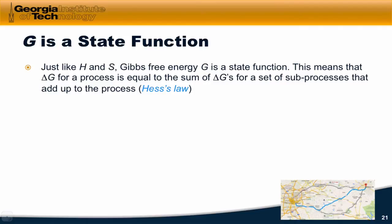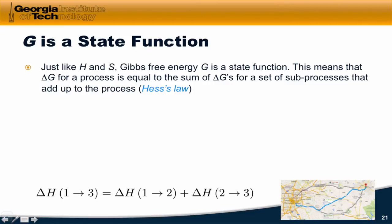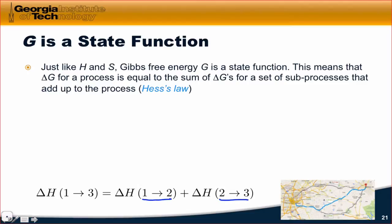That's just Hess's law, and we've seen it so far for enthalpy and entropy already. For example, if we have a process that converts state 1 to state 3 that we're interested in, and we have two sub-processes — 1 to 2 and 2 to 3 — that add up to 1 to 3, then just like we did for enthalpy, delta G for the 1 to 3 process is equal to the sum of the delta G's for 1 to 2 and 2 to 3. That's just Hess's law in action applied to the state function delta G.